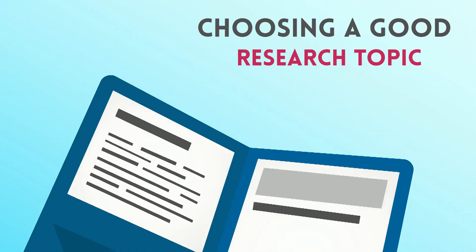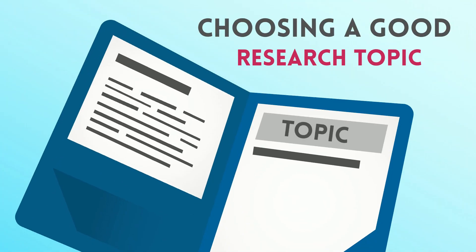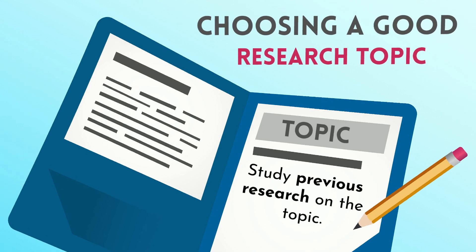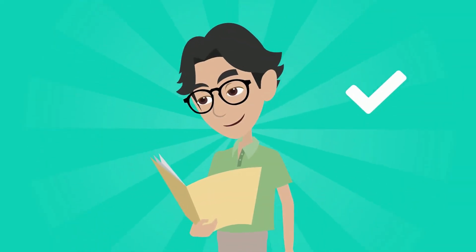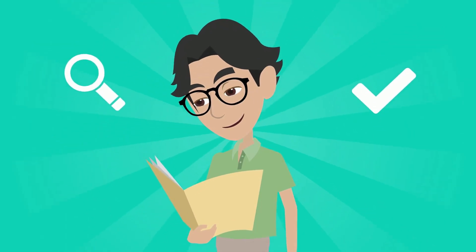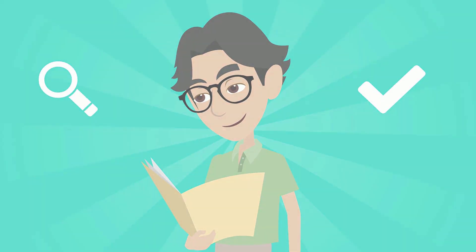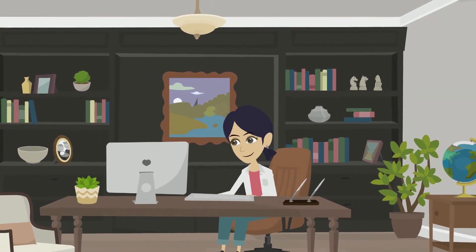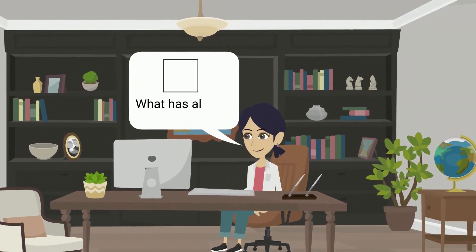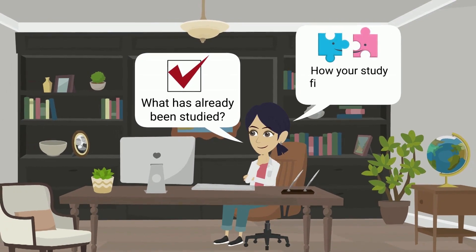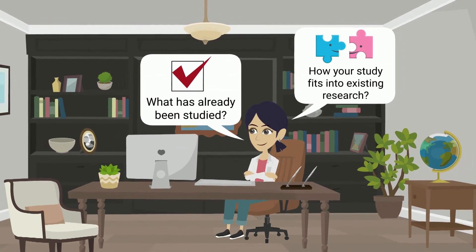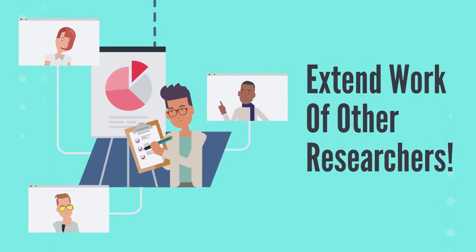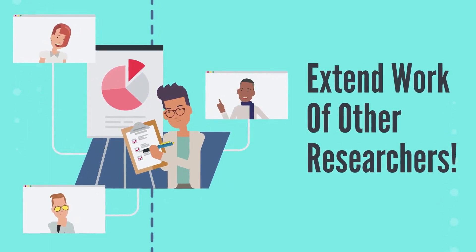Choosing a good research topic: good researchers study previous research on the topic. The research literature will help you to see what has been researched and where more research is needed. Study scholarly articles and other works related to your subject of interest to familiarize yourself with what has already been studied and how your study fits into existing research. This helps you to not duplicate existing work but extend the work of other researchers.